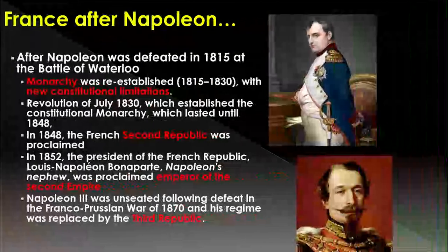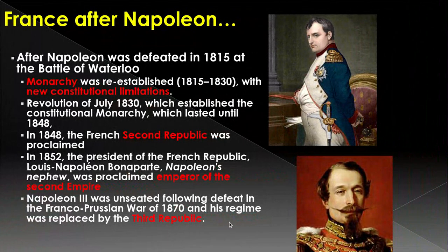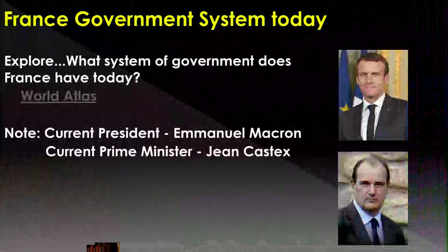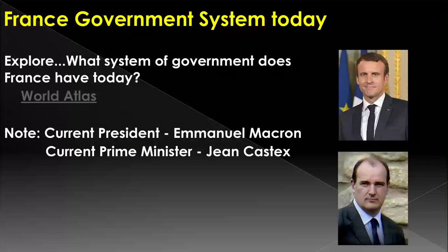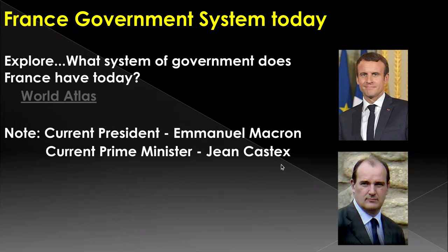From here on out, you're going to notice it's going to bounce around from monarchy to constitutional monarchy to republic, just one right after another. I'm not going to go through all of these because that's not really the big idea. The biggest idea is down here — the Third Republic. This is where France actually is today. What type of government do they have today? It's a republic. This is their president, Emmanuel Macron, and this is their prime minister. As of March 2022, this is how it sits.